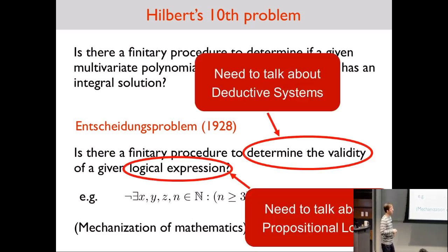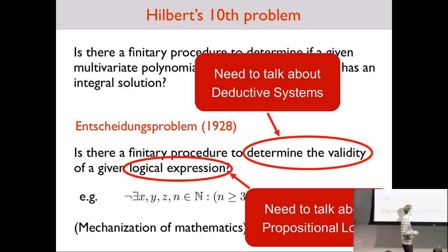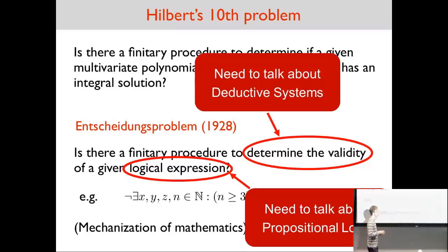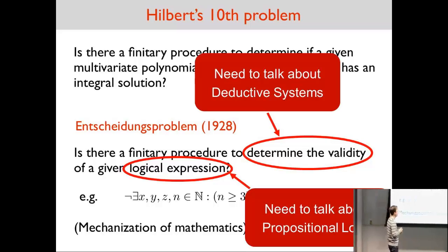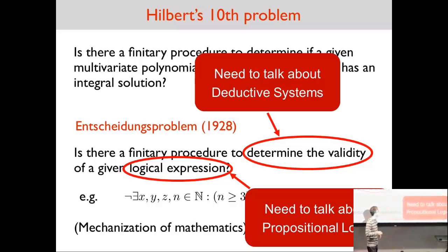In light of this, people decided to think about what the meaning of an algorithm is, and that led to the theory of computation. We'd like to think about this problem specifically, because one aspect of it is understanding what it means to determine the validity of a formula, to prove a formula, or to deduce a formula. Because of this, we need to talk about deductive systems and logic.